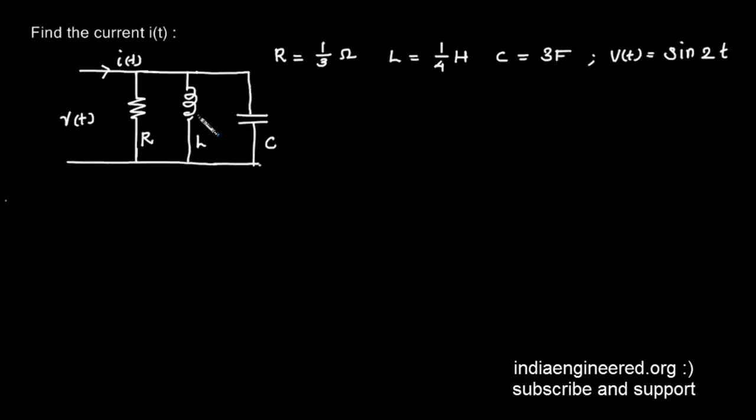We are given a parallel RLC circuit with resistance 1/3 ohm, inductance 1/4 Henry, and capacitance equal to 3 Farad. It is given that the input voltage is sine 2t. Now we have to find out what is the current i(t). So the procedure we are going to follow is first we will find out what is the conductance of the circuit.